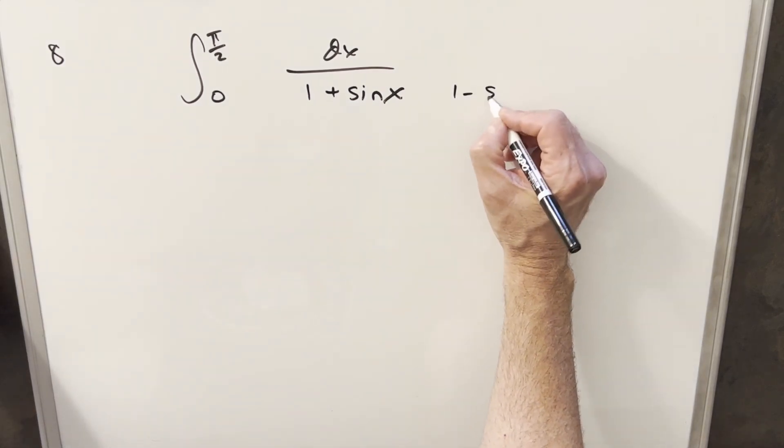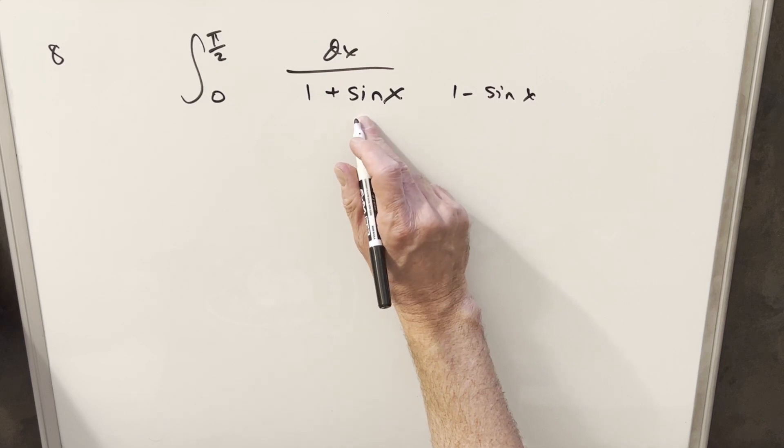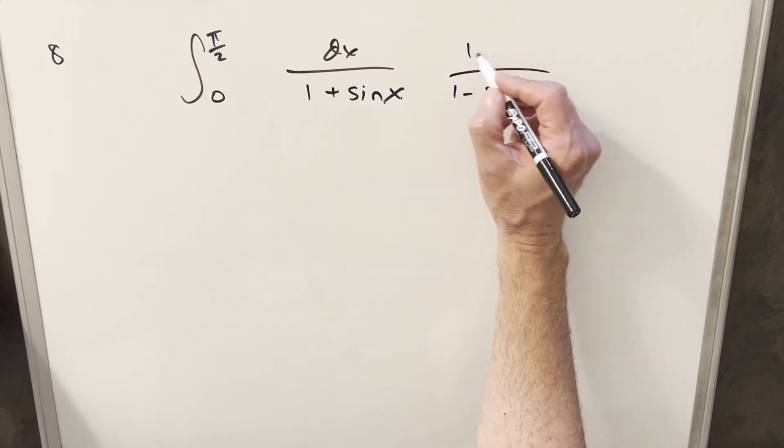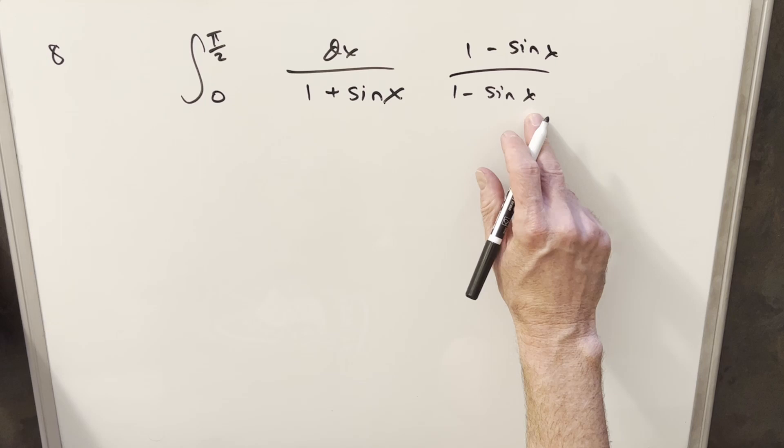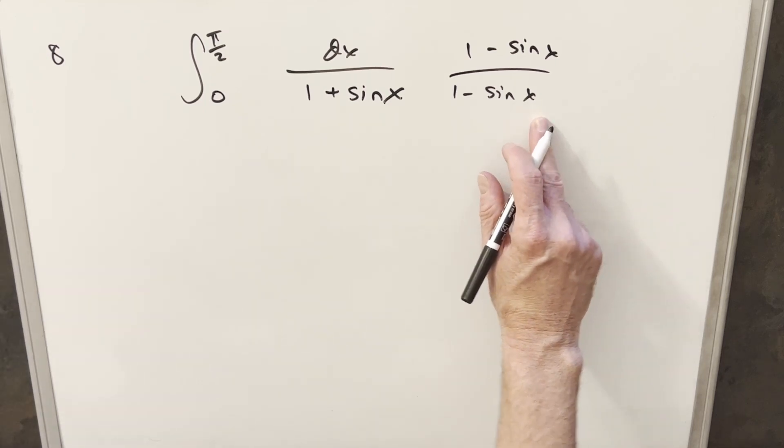So what I did for my first step is I wanted to multiply this by the conjugate of the denominator, 1 minus sine x, and we'll multiply of course by the same thing in the numerator. So we're not changing it, we're just multiplying it by 1.